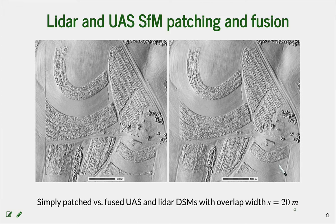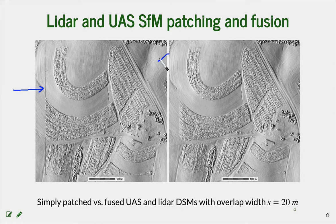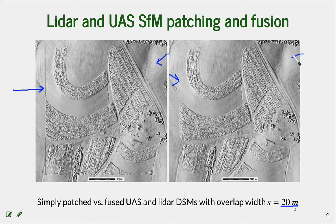This is how the sequence of patching looks. First, simple patching of the LiDAR-based DEM with the UAS-based DEM produces an edge — visible in your assignment example. Then, by applying smooth fusion with a constant overlap of 20 meters, we essentially mitigate these edges. The transition becomes invisible, and we have smoothly fused the new UAS data with the existing LiDAR DEM.